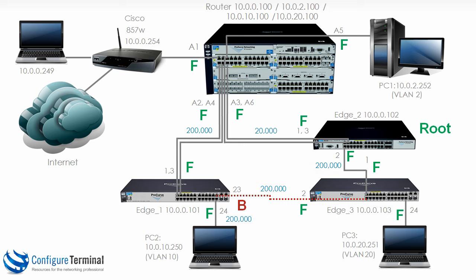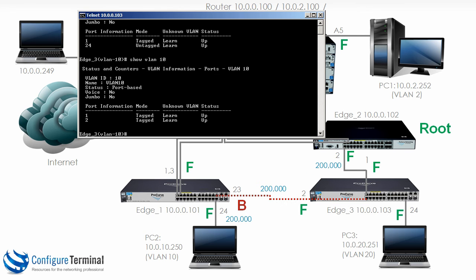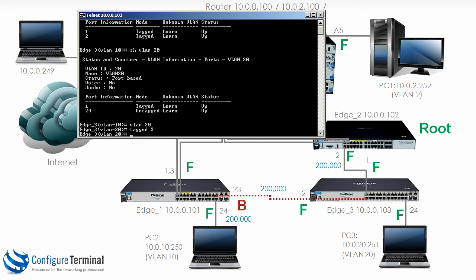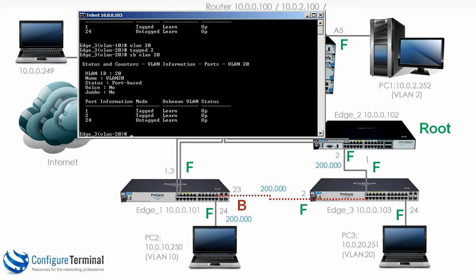What about edge 3? Show VLAN 20 shows it's tagged on port 1 and untagged on port 24. We need to type the command VLAN 20 tagged port 2. Now typing show VLAN 20, you can see the VLAN is tagged on port 1, tagged on port 2, and untagged on port 24. That's correct. I'll save the config.